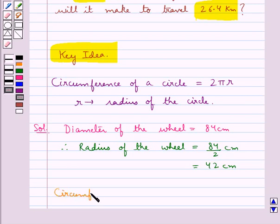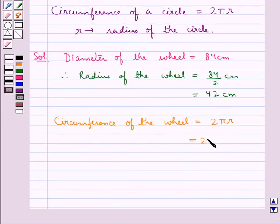Now, the circumference of the wheel is equal to 2πr. That is equal to 2 times 22 upon 7, the value for π, times r, the radius of the wheel which is 42 cm. Since 7 times 6 is 42, this is equal to 264 cm.